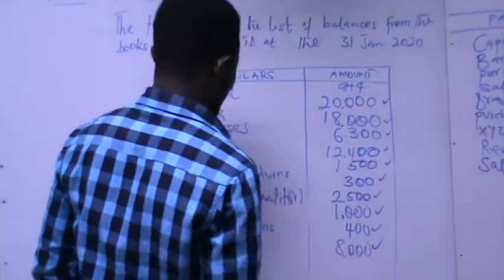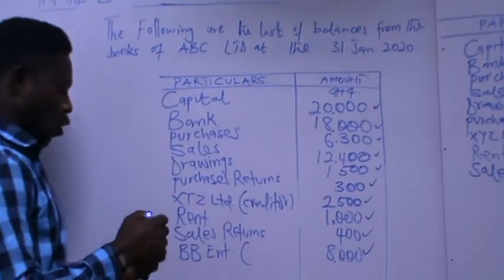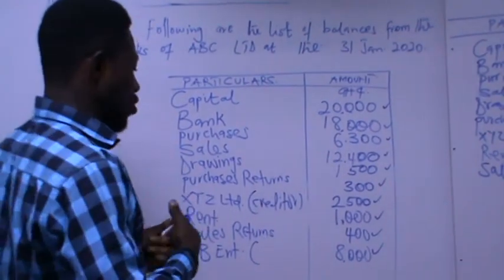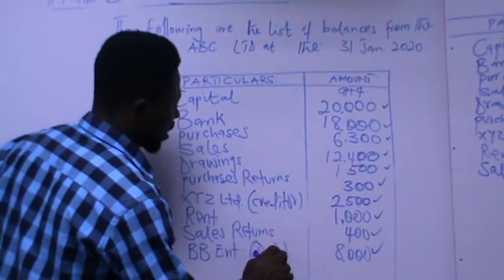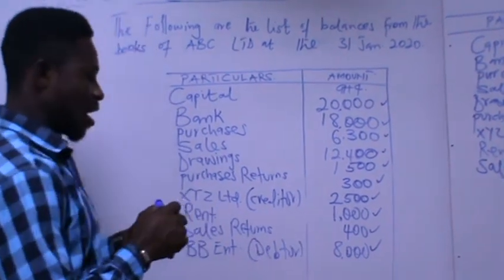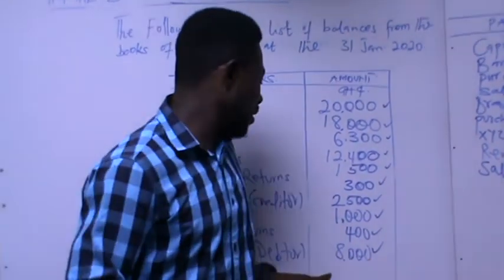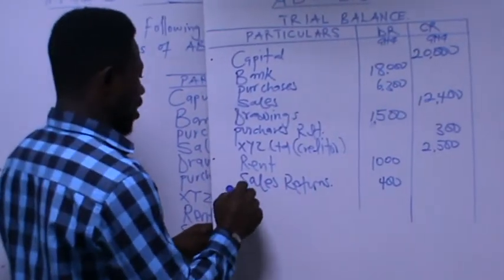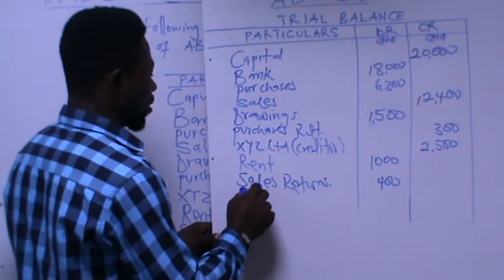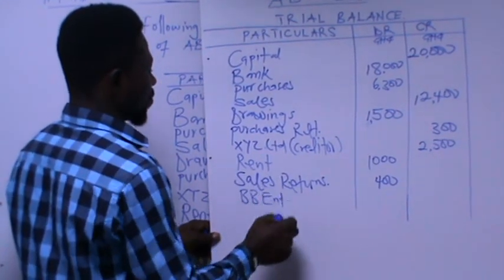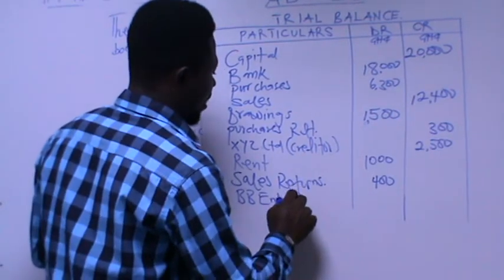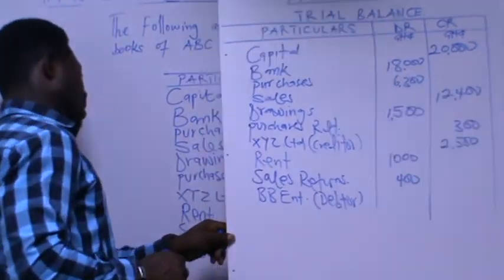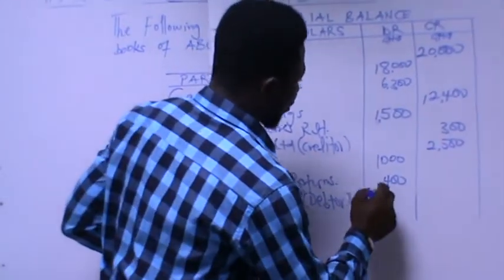Finally, BB Enterprise is a customer to whom goods were sold on credit, making them a debtor to the organization. Debtors have a normal debit balance, so BB Enterprise with 8,000 goes on the debit side.